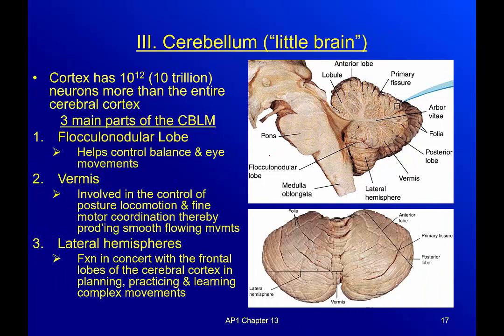There are three parts to the cerebellum. The flocculonodular lobe basically helps control your balance and eye movements — if you hit someone in the back of the head, this is the part that gets disrupted. The vermis is that little area connecting the two halves; it's involved in the control of posture, locomotion, and fine motor coordination — being able to pick up a dime, write, or type on your phone.